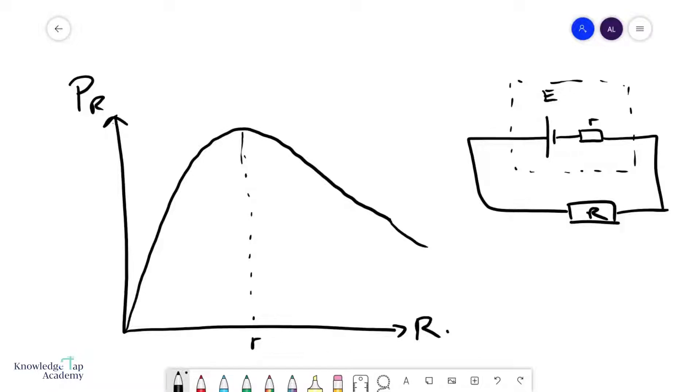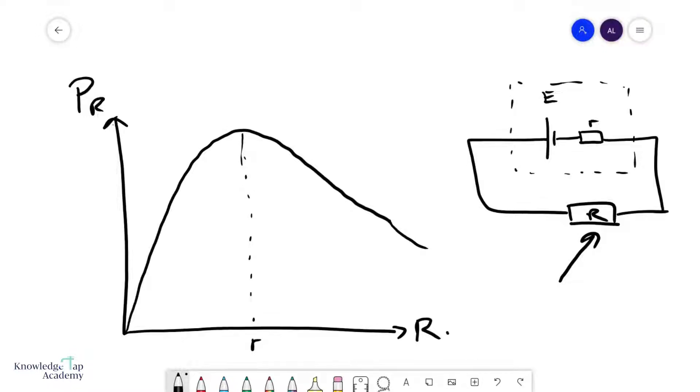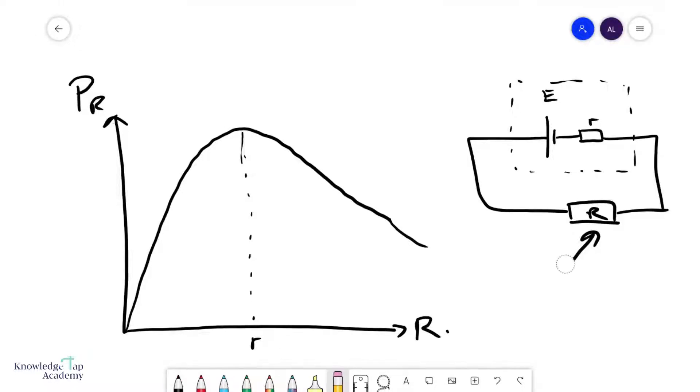We're going to discuss how to maximize the power dissipated in your external resistance, which is like performance. But we're also going to talk about how we balance the efficiency of your setup. We're going to discuss something called the Maximum Power Theorem. This is a nice thing to know.